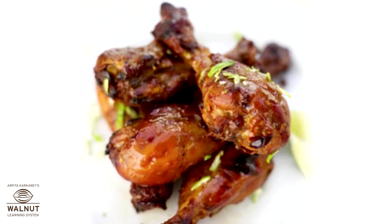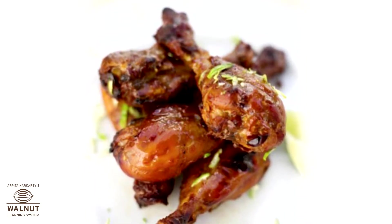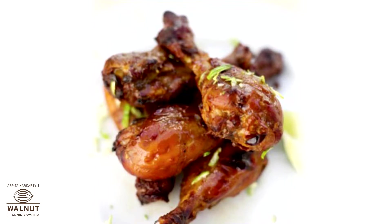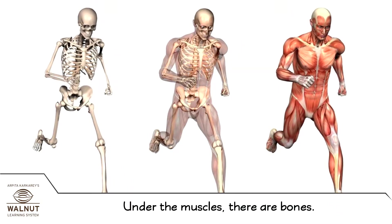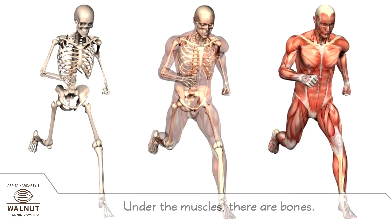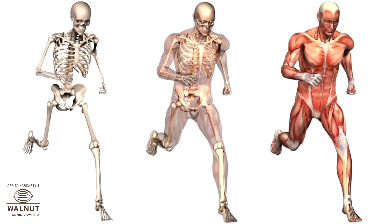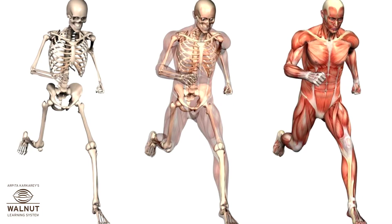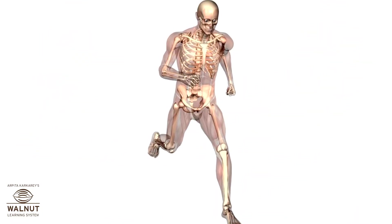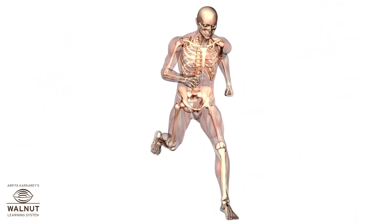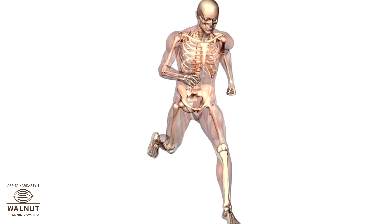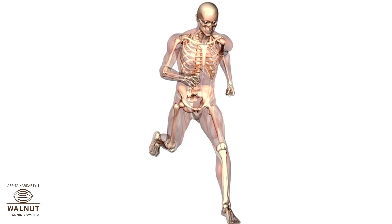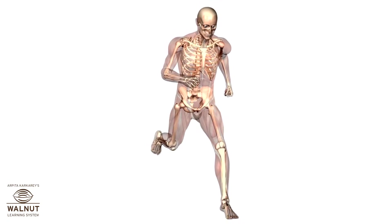When we eat mutton, chicken or fish, we eat the muscles of those animals. Under the muscles, there are bones. Bones are hard — they support our body. Where two bones meet, we have a joint. We can move our body at these joints. There are bones in almost all parts of the body.